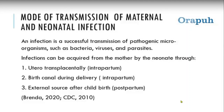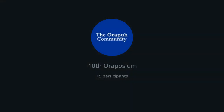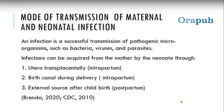Number two: the birth canal during delivery. This especially happens when there is early rupture of membranes and the mother has some infections, such as candidiasis in the birth canal. When there is an infection in the mother's birth canal and the protective membrane has ruptured, and the baby has not delivered — maybe there is prolonged labor — the baby can easily contract an infection. Any ascending infection in the environment, such as in the labor ward, can also reach the baby and cause death.